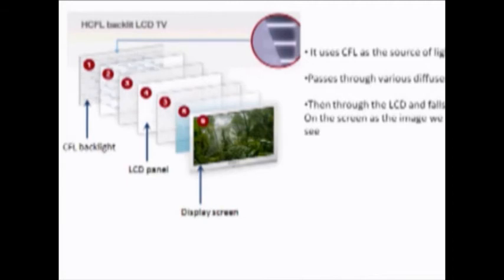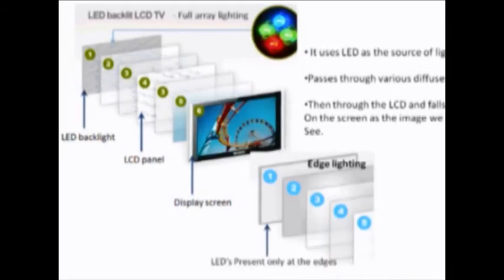A normal LCD TV uses a CFL or cathode fluorescent lamp as a light source and the light passes through various diffusers, a polarizer, a LCD panel and finally falls on the screen as an image. Whereas an LED TV instead of CFL, a light emitting diode or LED is used as a light source.